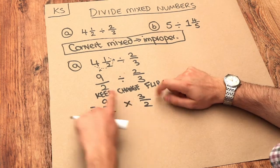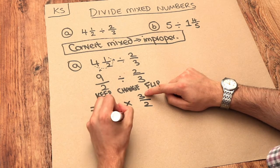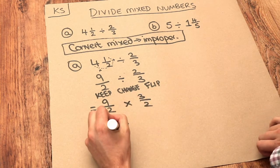To multiply two fractions together we multiply the numerators: 9 times 3 is 27, and we multiply the denominators: 2 times 2 is 4.